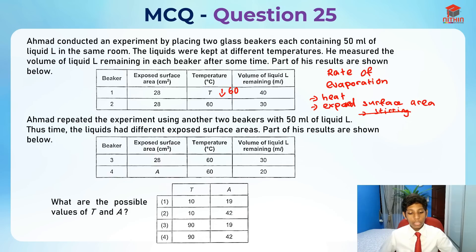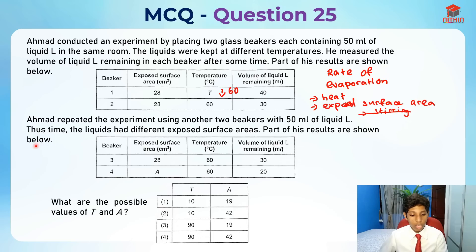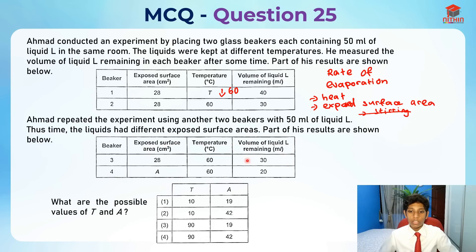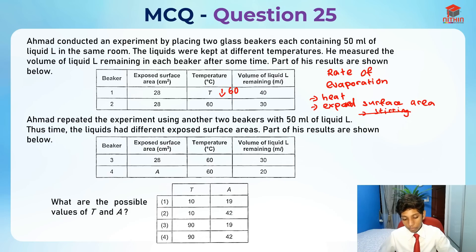Ahmad repeated the experiment using another set of beakers with 50 ml of liquid L, this time with different exposed surface areas. Beaker 3 had an exposed surface area of 28 cm² at 60 degrees, with a volume remaining of 30. Beaker 4 had the same temperature of 60 degrees but a lesser volume remaining, so its exposed surface area must be higher than 28 in order for more liquid L to evaporate.